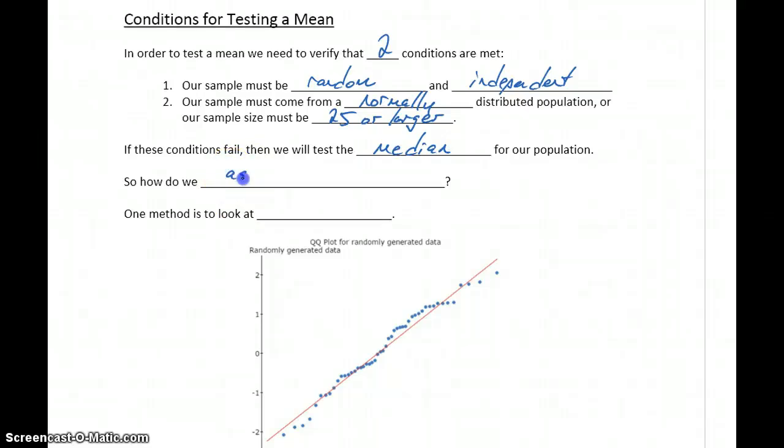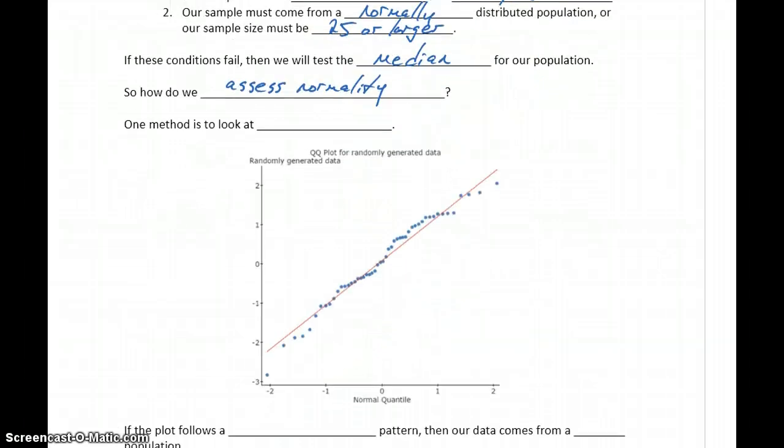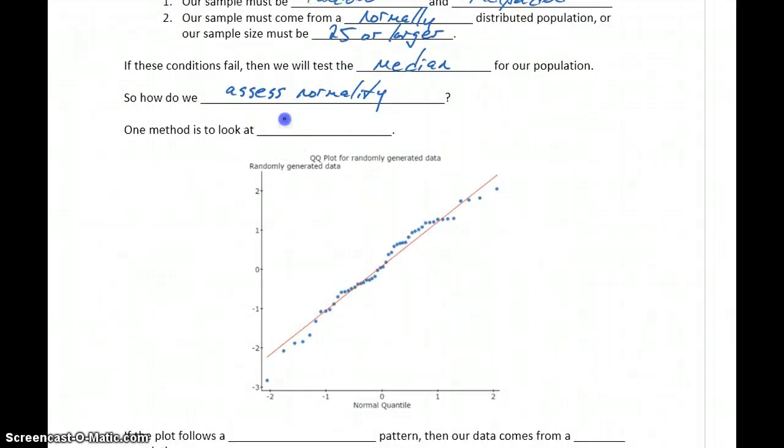So the question is, how do we assess normality? We've done this previously when we looked at constructing confidence intervals for averages.